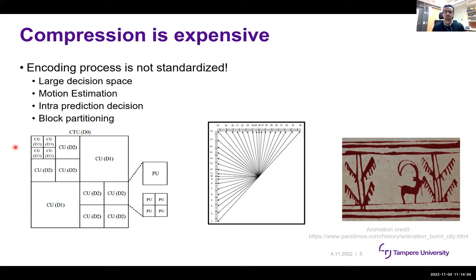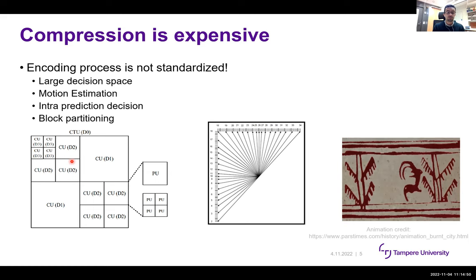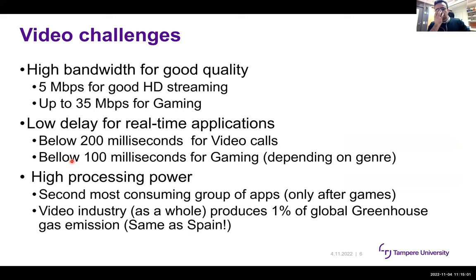Block partitioning adds further complexity. New-generation standards support block sizes from 128×128 down to 4×4 pixels. The partitioning structure is like a quad-tree: you can keep a large block or divide it into four sub-blocks, recursively. Finding the best partition requires exhaustive search over a huge number of combinations, which significantly adds to computational complexity.